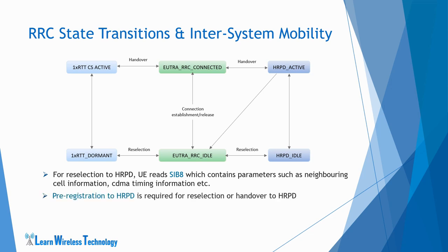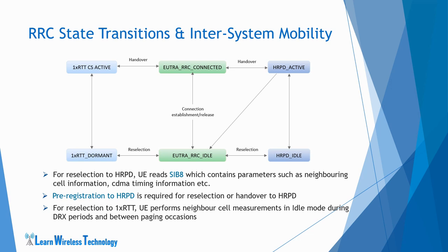For performing cell reselection or handover from eUTRAN to HRPD, the UE must previously establish a presence in the HRPD network through pre-registration procedure or previous HRPD attachment. The information controlling HRPD pre-registration is also provided in SIB8. The UE performs cell reselection to HRPD while in RRC idle state and the reselection mechanism is the same as in 3GPP inter-RAT cell reselection. In case of cell reselection from eUTRAN to 1xRTT, the UE moves from eUTRAN RRC idle to 1xRTT dormant state and performs CDMA2000 1xRTT neighbor cell measurements during DRX periods and between paging occasions.